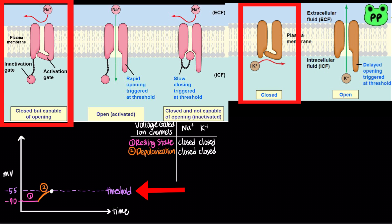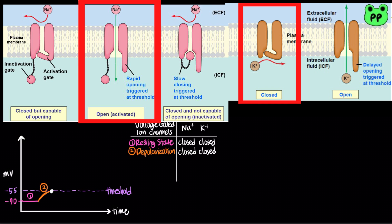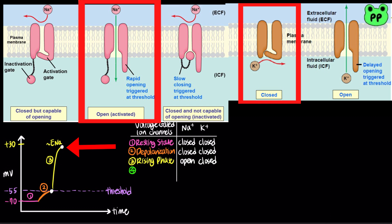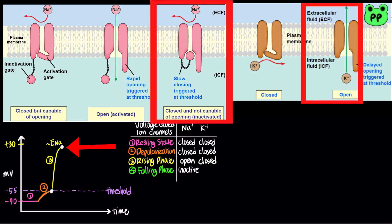Therefore, an action potential is a brief all-or-none depolarization. When the membrane potential reaches a threshold of about negative 55 millivolts, many voltage-gated sodium channels open. In the third phase, known as the rising phase, a positive feedback cycle rapidly brings the membrane potential close to the equilibrium potential of sodium ions. Two events occur at the peak of the action potential: most voltage-gated sodium channels become inactivated, blocking the inflow of sodium ions; and most voltage-gated potassium channels open, allowing potassium ions to flow out of the cell, which rapidly repolarizes the cell during the falling phase.